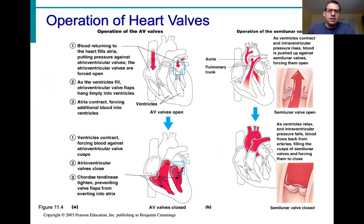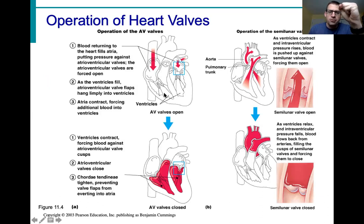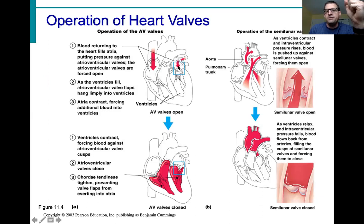Regarding valve function: as blood flows into a chamber and continues to enter, it slowly forces those valves open and blood moves into the next chamber. Then the atria contract and push all that blood down into the ventricle inferior to it — right atrium into right ventricle, or left atrium into left ventricle. As the ventricle pumps blood up into the blood vessel, the AV valves close to prevent backflow.